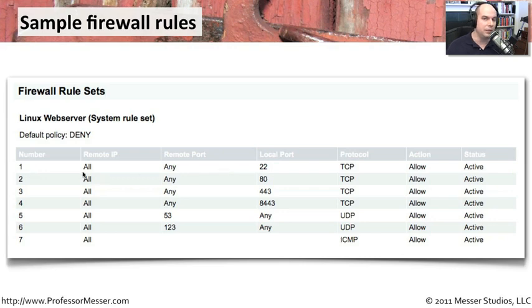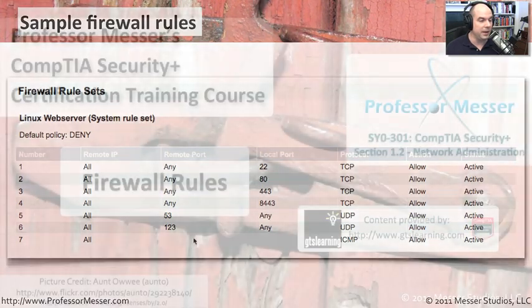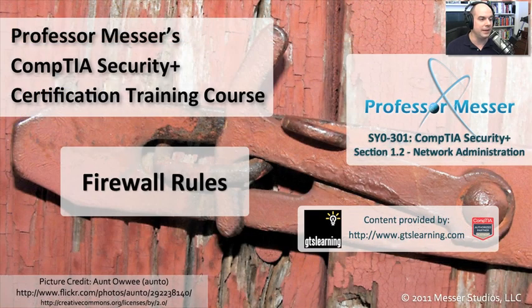We're simply following the rules of our firewall, one after the other, until a rule fires or traffic reaches the bottom where it is implicitly denied.